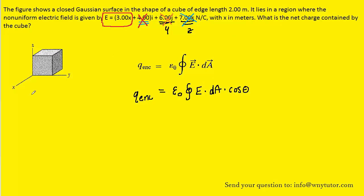Let's talk about dA by considering the front face of the cube. The dA vector is an area vector that points away from the interior of the Gaussian surface, forming a perpendicular with that surface. The electric field along the x-direction is 3.00x, a positive value, meaning it points along the positive x-direction. So the electric field vector points in the same direction as dA, meaning the angle between the electric field and the dA vector for the front surface of the cube is 0 degrees.